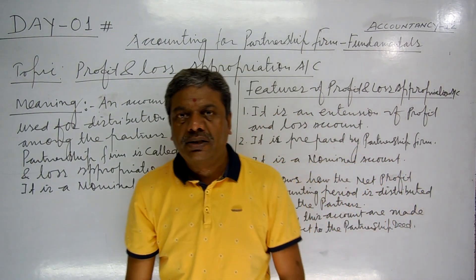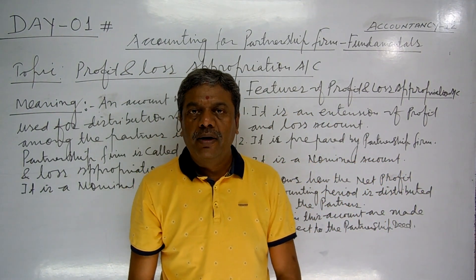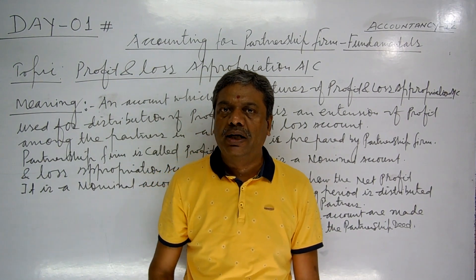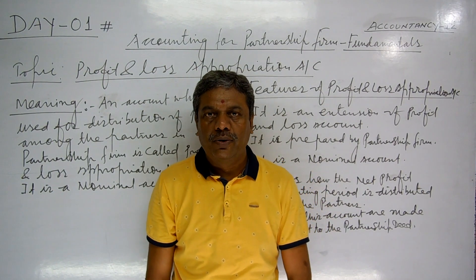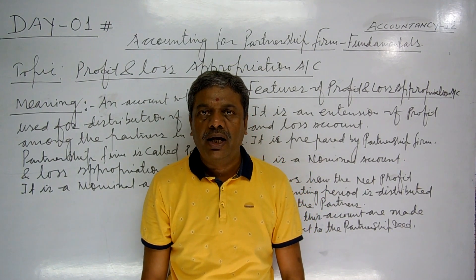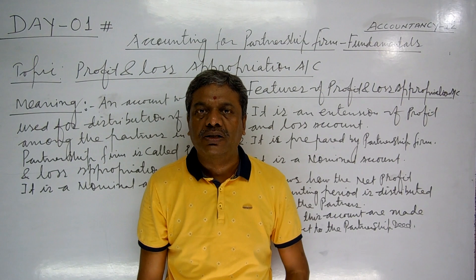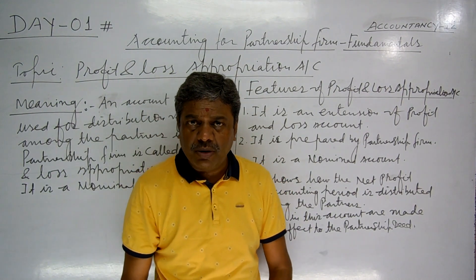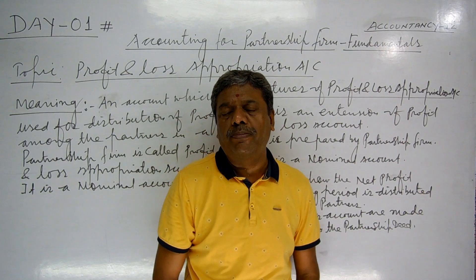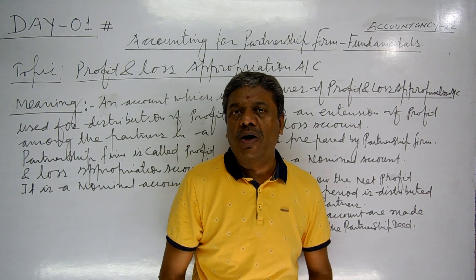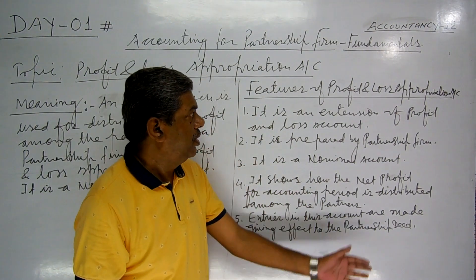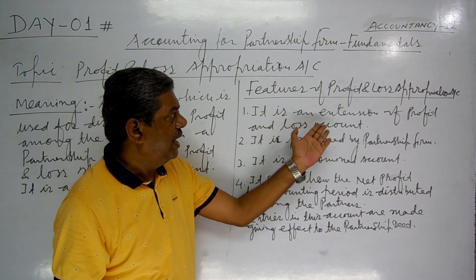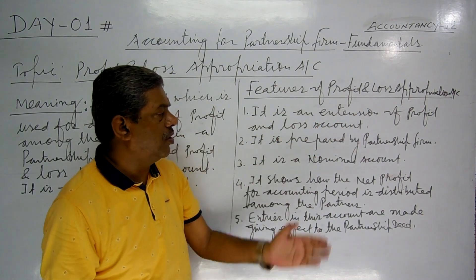It is an account which is used for distribution of profit among the partners in a partnership form. We call it the Profit and Loss Appropriation Account. Feature number one: it is an extension of the Profit and Loss Account.